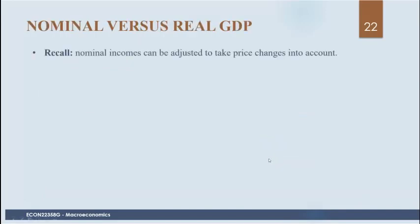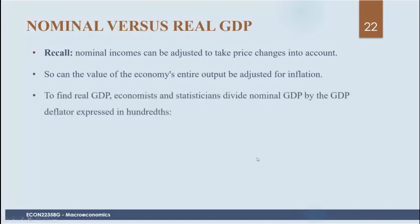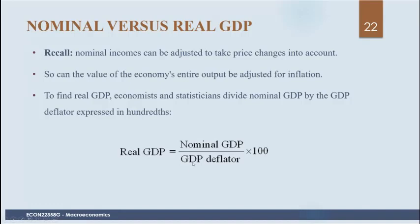Nominal incomes can be adjusted to take price changes into account, and so can the value of the economy's entire output. Any nominal series can be converted to a real series using a price index. In this case, we could use the GDP deflator — we would calculate real GDP using the deflator by taking nominal GDP and dividing it by the GDP deflator.